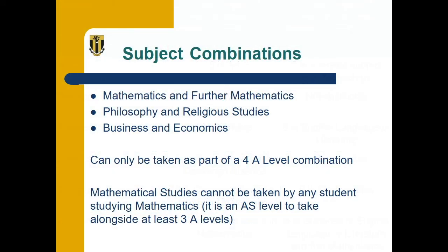While you decide on your subjects, don't forget to consider, alongside what you enjoy, how your combination fits together. If you are applying for something like medicine in the future, you must study Chemistry. If you are thinking of engineering, think Maths. If you are not so clear about what your future holds, keep your options open. Note that we have certain pairs of related subjects that can only be taken as a 4 A Level combination. Mathematical Studies is the only AS Level qualification that we offer; however, it must be in addition to at least 3 other A Levels, and cannot be studied alongside any other A Level Maths combination.